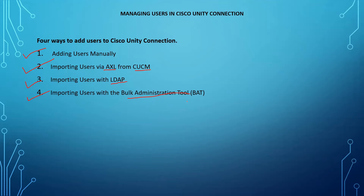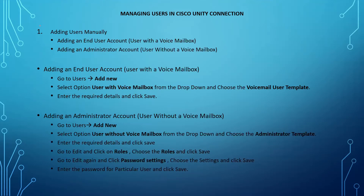Let me show you with the help of slides first how we can add users manually, and then we will go to the practical demo. The first slide covers adding users manually. There are two things: adding an end user account and adding an administrator account. For adding an end user account — that's a user with a voice mailbox — you go to Users > Add New, choose the option 'User with Voice Mailbox,' choose the template, enter the required details, click Save, and your end user will be added.